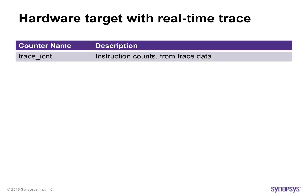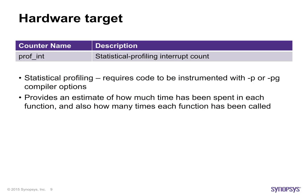When using the ARC real-time trace capability on FPGA or ASIC hardware connected via JTAG, the debugger can provide profiles based on instruction counts using data from the recorded trace. On an FPGA or ASIC target connected via JTAG, the debugger can display statistical profiling data. This requires that the application be recompiled with instrumentation, which periodically samples the program counter values during execution, and after the run, the debugger can display an estimate of the percentage of time spent in each function.